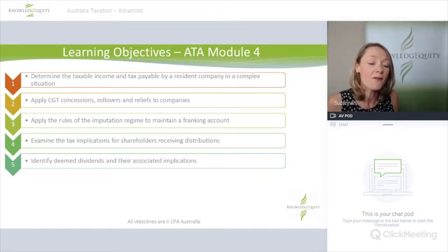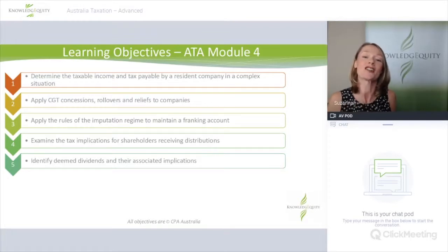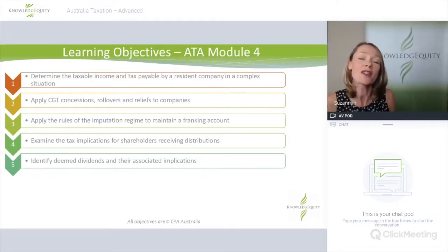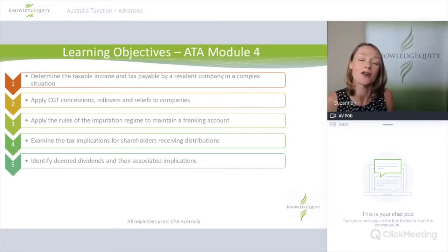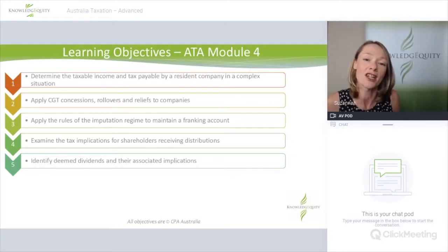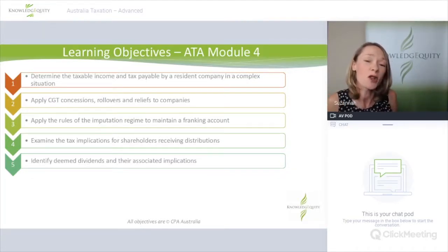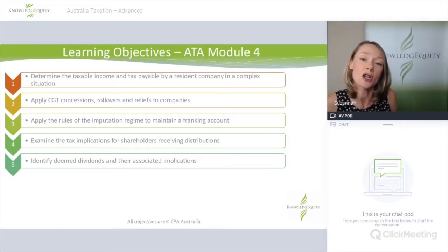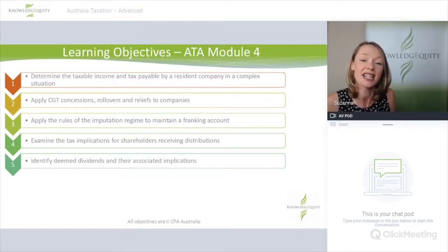A franking account is the means by which company tax paid by the company itself can be imputed to the individual shareholders and used as a credit to reduce the amount of tax they pay on company distributions. Learning objective four examines the tax implications for shareholders receiving distributions. Shareholders, as well as getting this franking credit tax offset, also have to gross up their income received by the franking credit attached to that distribution. The last learning objective is all about deemed dividends.